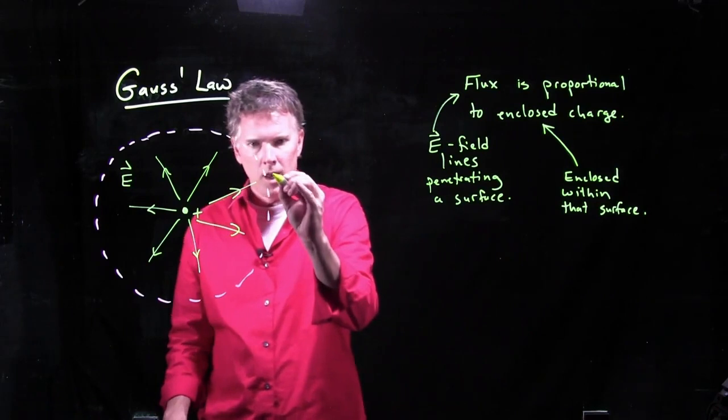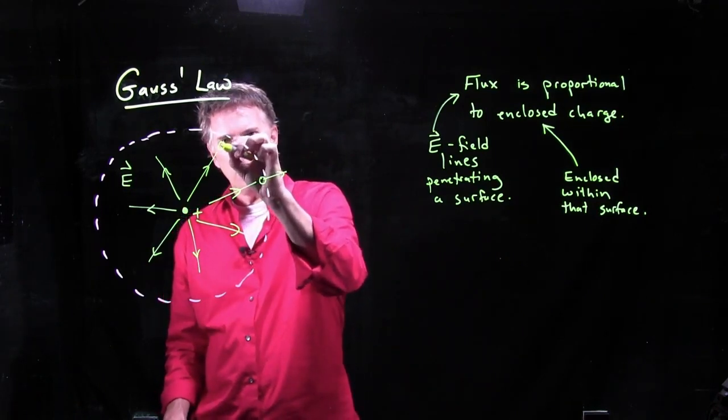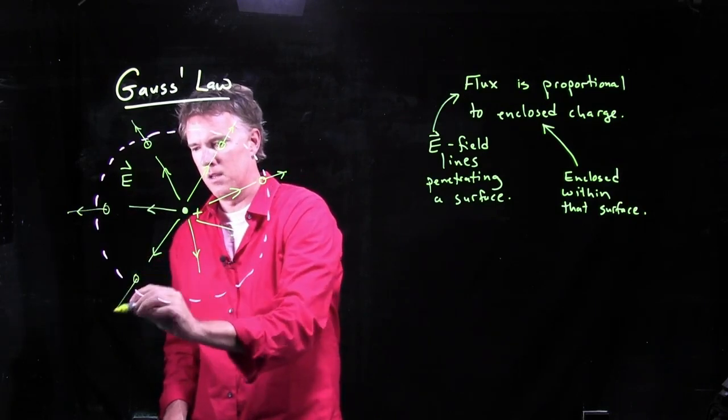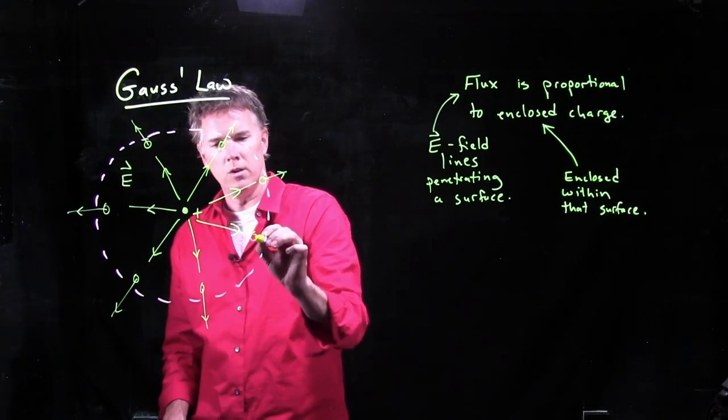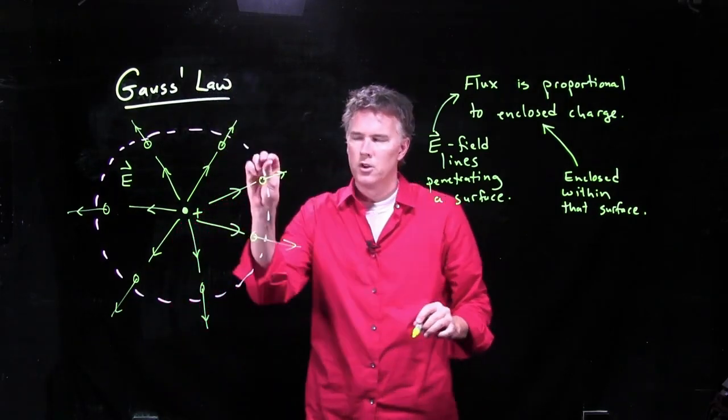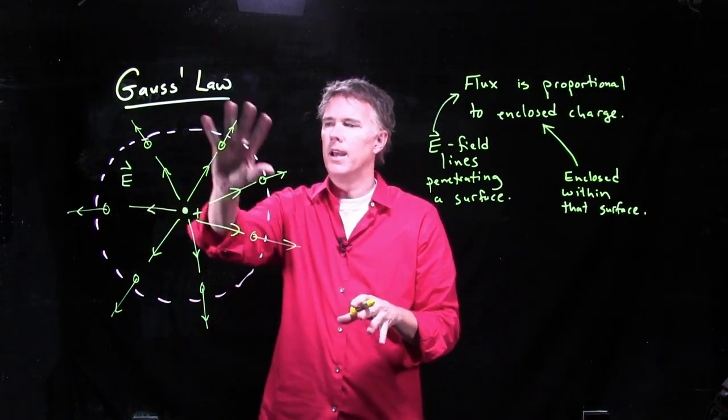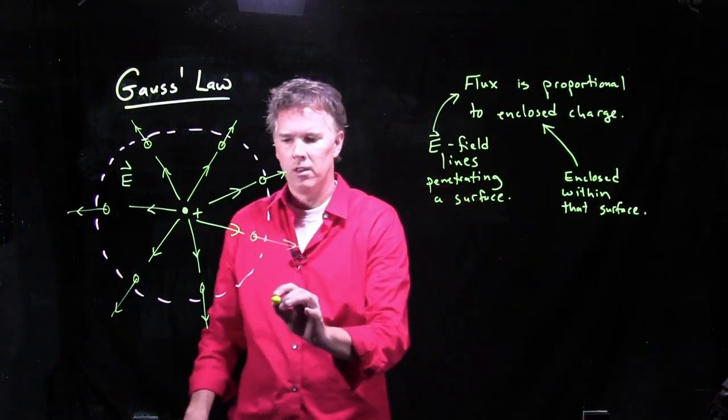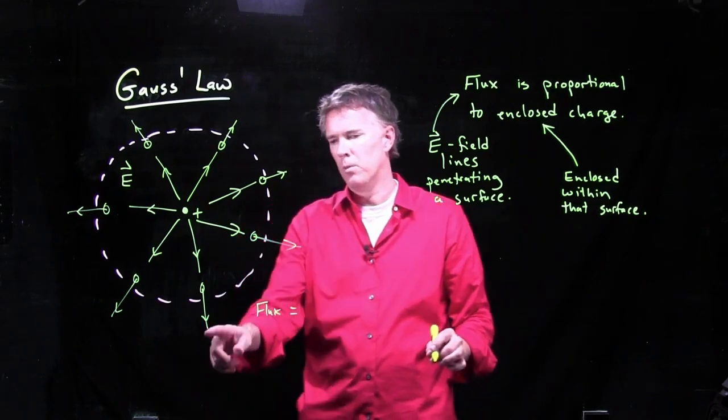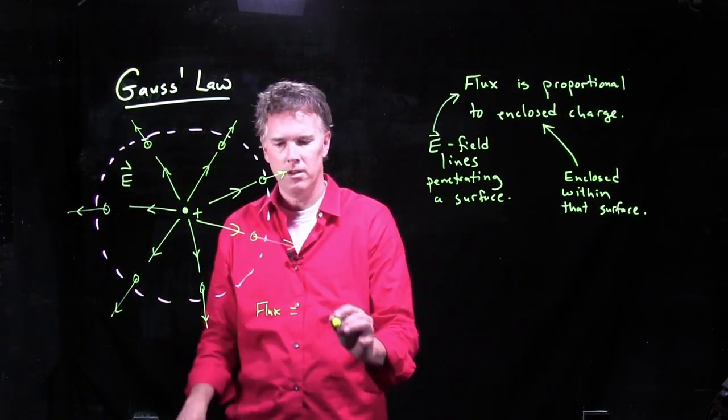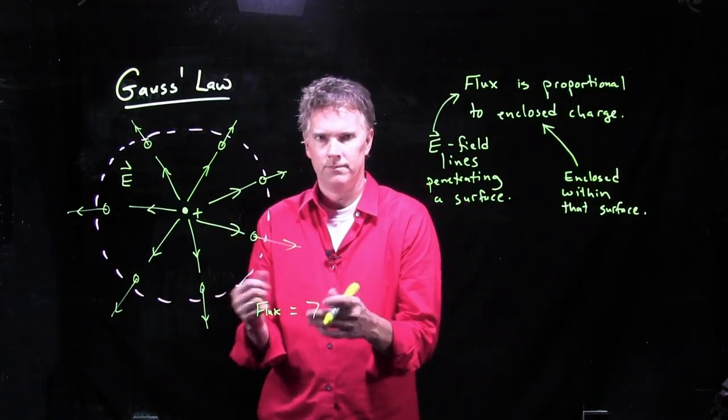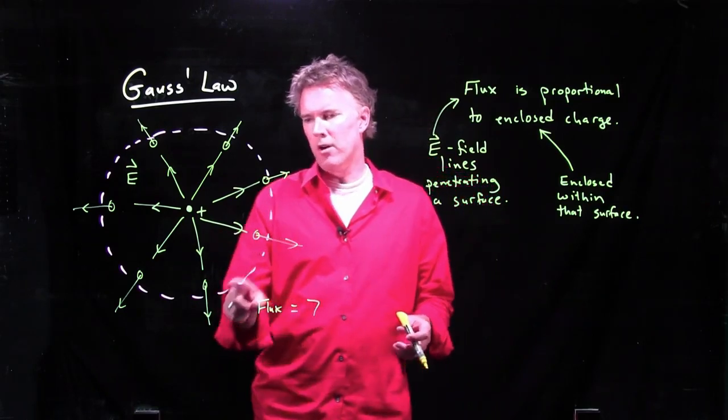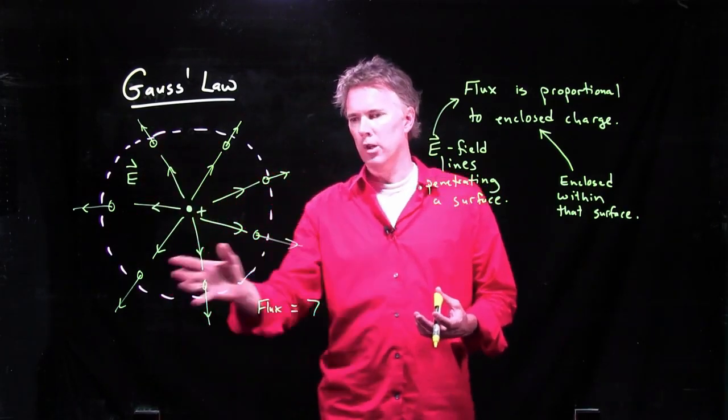What we're saying is the flux, the number of E-field lines coming out, has to be proportional to the enclosed charge. I've got one line popping out right there, another there, another there, and so on. We're trying to draw this in 3D as these things pop out of the closed surface. The charge inside is sending these electric field lines out through this spherical shell. So what is the flux in this case? The flux would be 1, 2, 3, 4, 5, 6, 7 in some appropriate units.